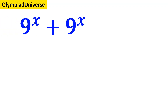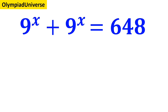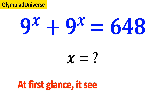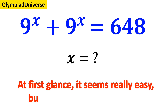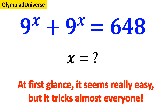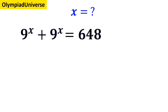If 9 to the power of x plus 9 to the power of x is equal to 648, then what is the simplest possible solution for x? At first glance it seems really easy, but it tricks almost everyone. Let's dive in and crush it together.